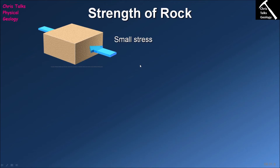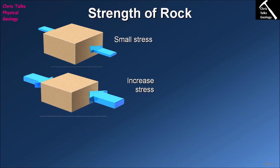What happens to a rock when a small stress is applied? If we apply a small stress to our block of rock, not much is really going to happen — rock is a very robust material, so a small stress won't do anything. As we begin to increase the stress, the rock will initially deform in a plastic fashion rather than a brittle one. It will flex slightly: because we're compressing the rock from each end, the length gets shorter while the width and height expand ever so slightly in response to the plastic deformation.